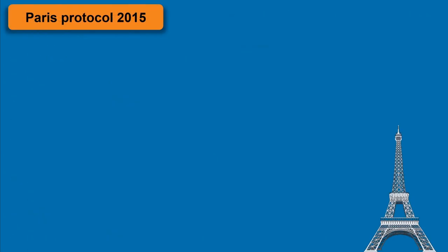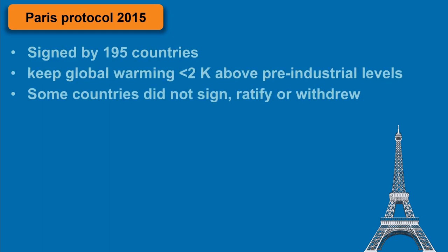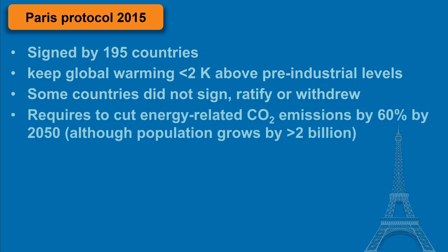The Paris Protocol was signed by nearly 200 countries with a promise to keep global warming below 2 Kelvin above pre-industrial levels. Many countries, particularly those with high gas and oil exports, did not sign it. Keeping this promise requires drastic measures — more specifically, it requires cutting CO₂ emissions by 60% by the year 2050, although the global population will grow by about 2 billion during the same period.